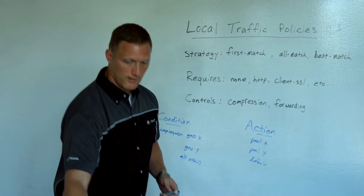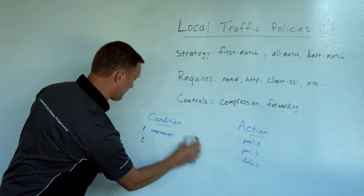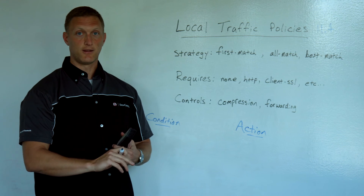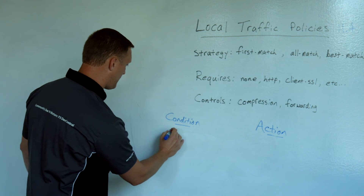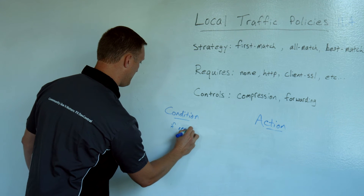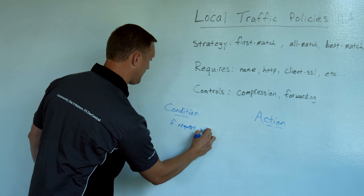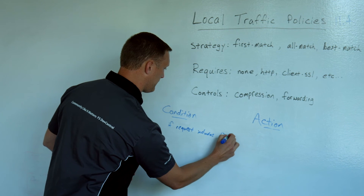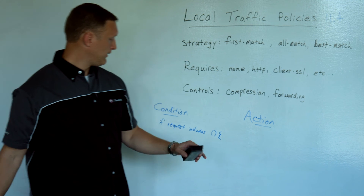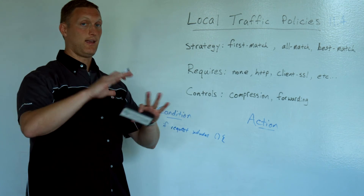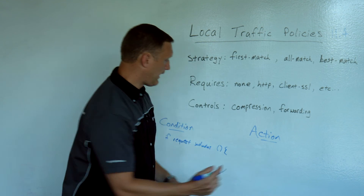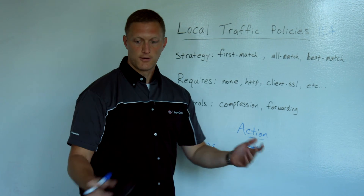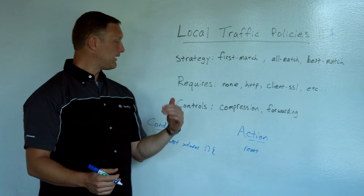Another example: let's say the ShellShock vulnerability just came out. If the request includes that ShellShock string of characters — the parentheses and the curly bracket — then the action might be to reset the connection or kill it. That's just another example of something you can do with a local traffic policy, and you can implement it in a matter of like a minute or two.